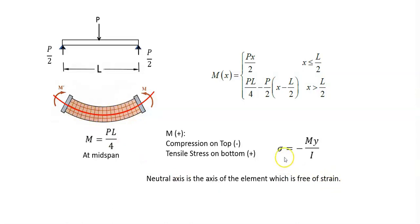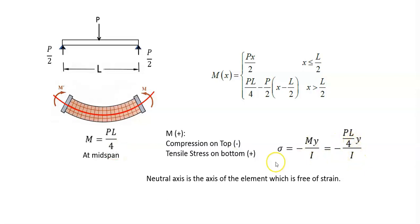You can calculate maximum stress on top or bottom using this relation. As you have the maximum moment PL over 4, you can plug it in and calculate maximum compression on top and maximum tension at the bottom surface. We can also calculate the deflection of the beam at the middle using this equation: PL³ over 48EI.